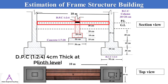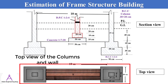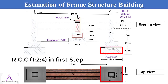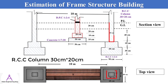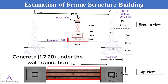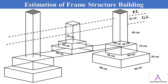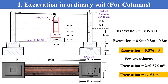Here is the top view of the wall between two columns. RCC 1:2:4 is used for the first strip and second strip. The RCC column is 30 × 20 centimeter. Concrete 1:7:20 is placed under the wall foundation, followed by brickwork in the wall foundation — in the first strip and second strip. For better understanding, the 3D visualization of the given section is shown.